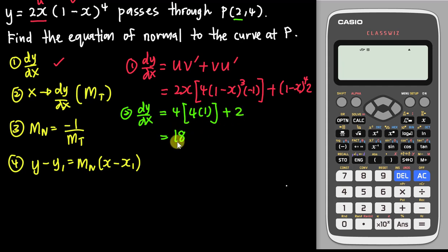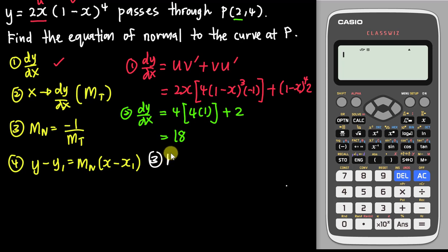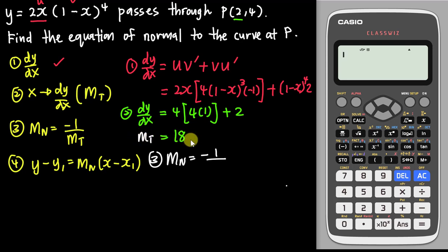So the gradient of tangent is 18. Now for step 3, the gradient of normal is negative one over the gradient of tangent, which gives negative 1 over 18.